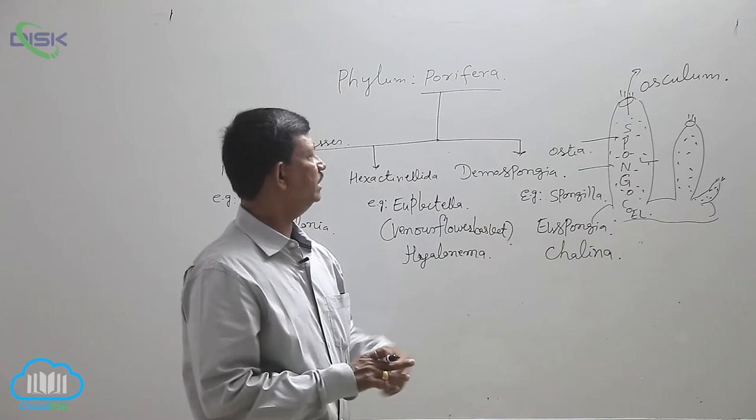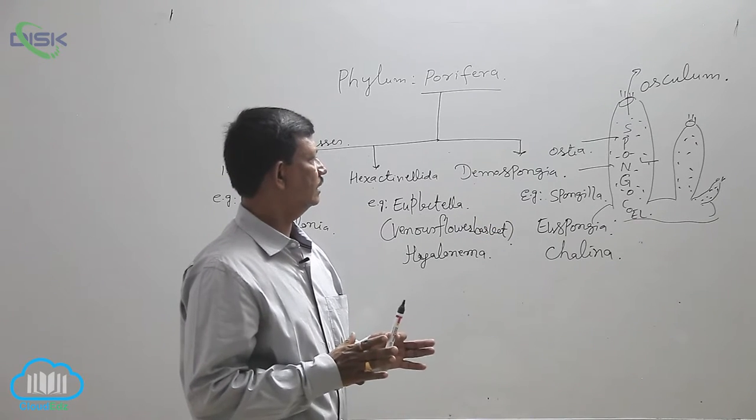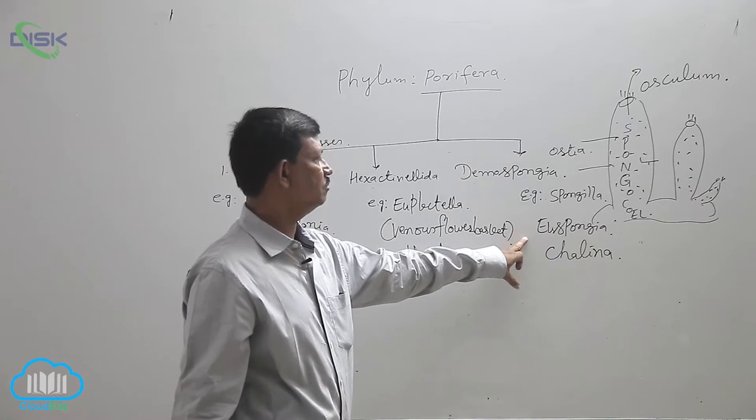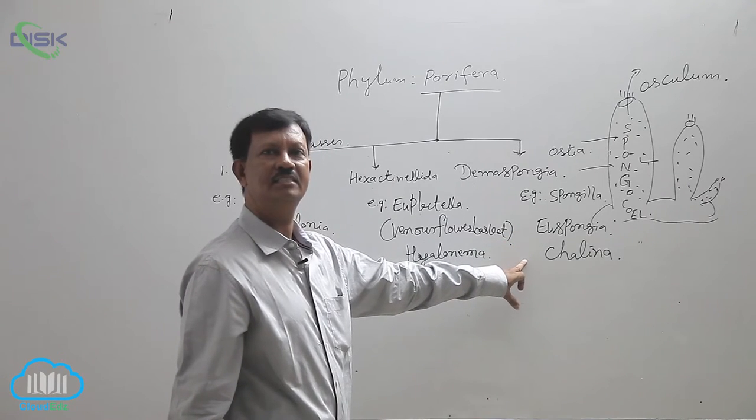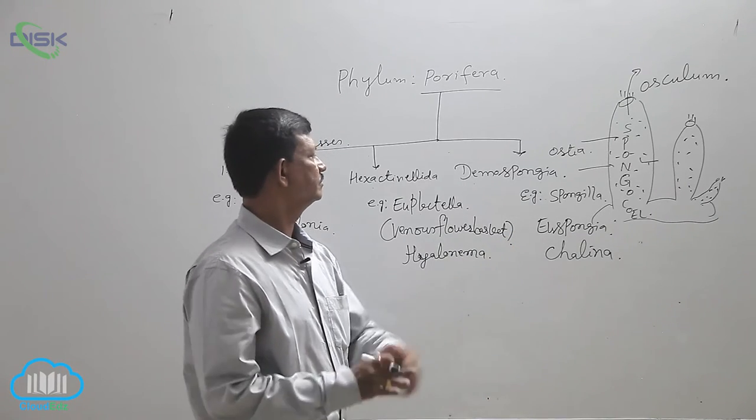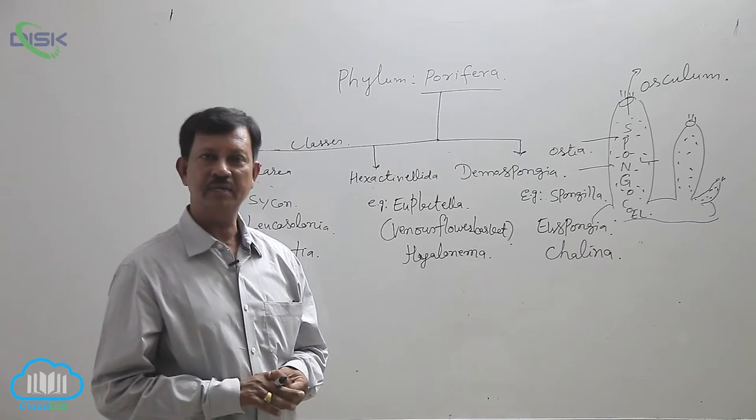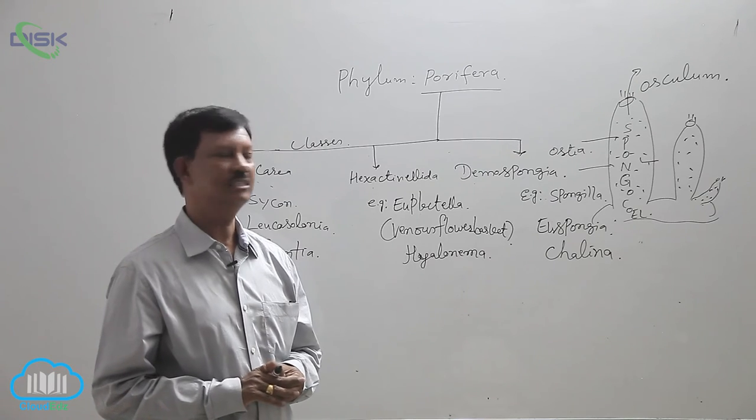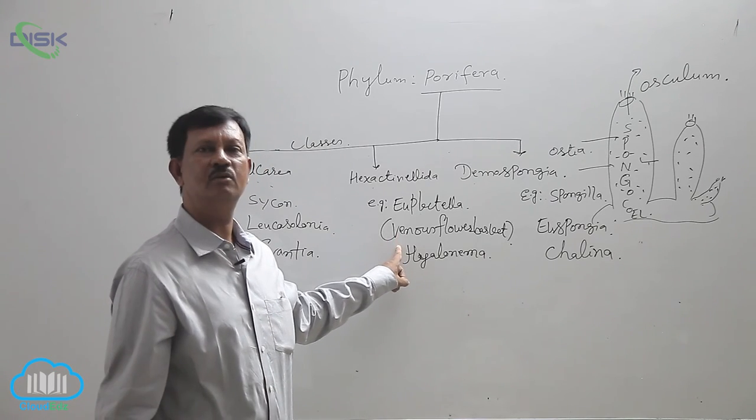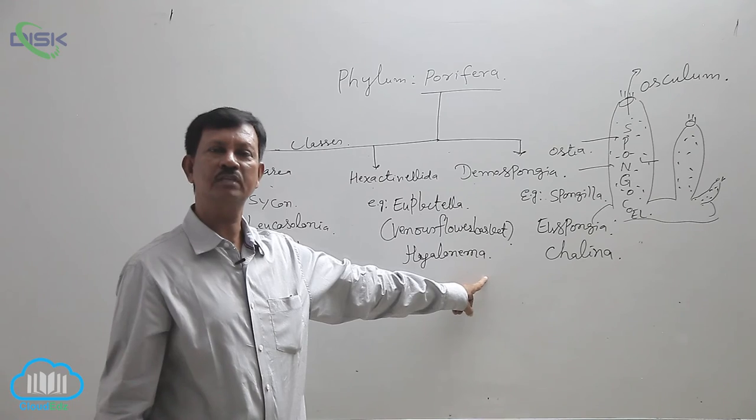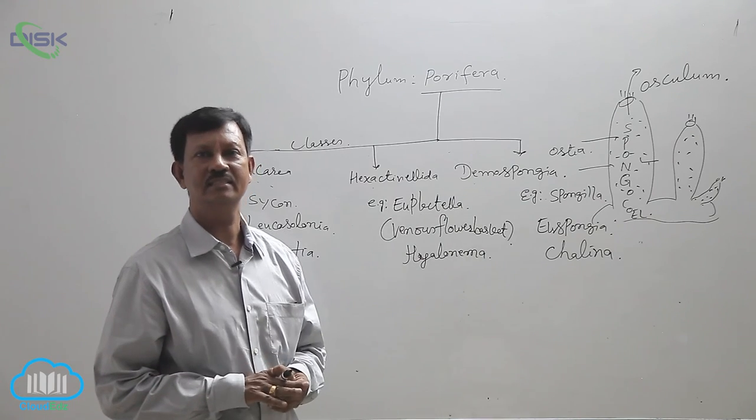Euspongia is commonly known as bath sponge, and Chalina is known as the dead man's finger. Demospongia lacks calcareous spicules, but siliceous spicules and spongin fibers are present. Sometimes both are absent in this class.